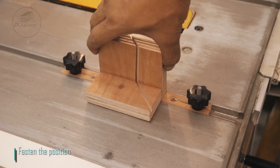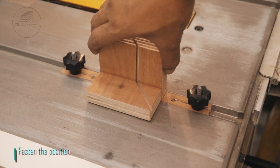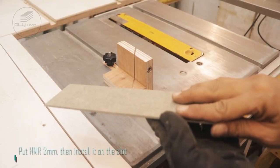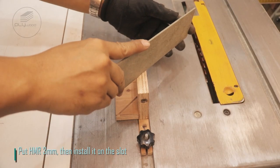Fasten the position. Put HMR 3mm, then install it on the slot.